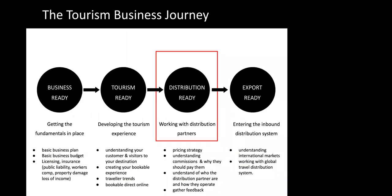Let's have a quick look at the tourism business journey. As a tourism business grows, it moves along a spectrum from being business ready — having the fundamentals in place — through to tourism ready, which is about defining your experience and being directly bookable online. Once you've got that in place, you move to becoming distribution ready, which is what we're focusing on today. The final step is export ready — entering the inbound distribution system for international markets, which is currently on hold. If you can nail distribution ready domestically, you'll be ready for international partners when travel returns.